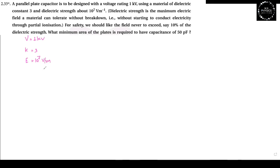For safety, the field should never exceed 10% of the dielectric strength. Taking 10^7 divided by 100 gives us 10^6 volts per meter. What is the minimum area of the plates required to have a capacitance of 50 × 10^-2 farads?